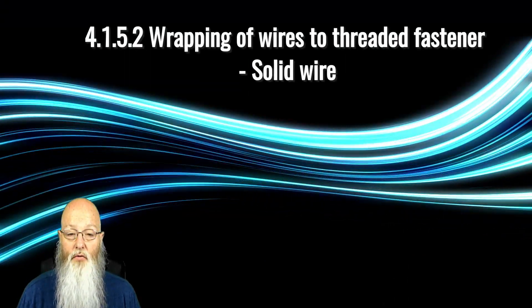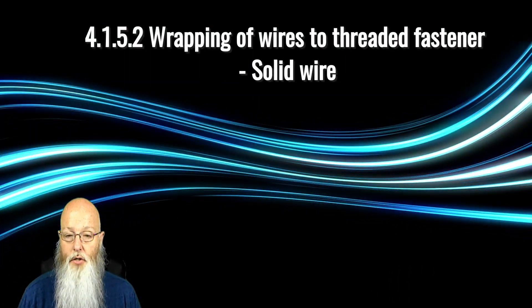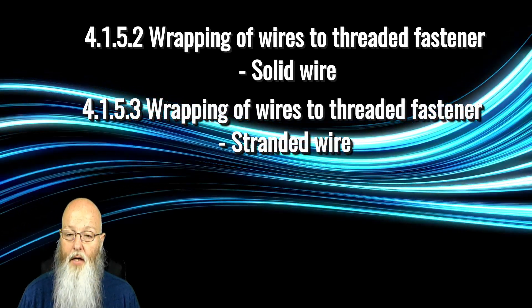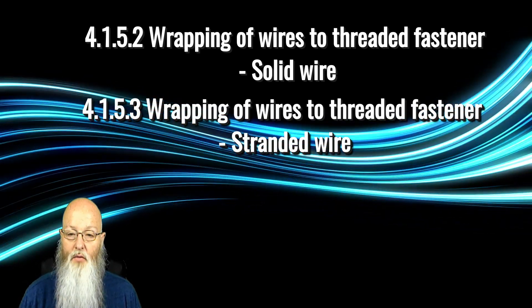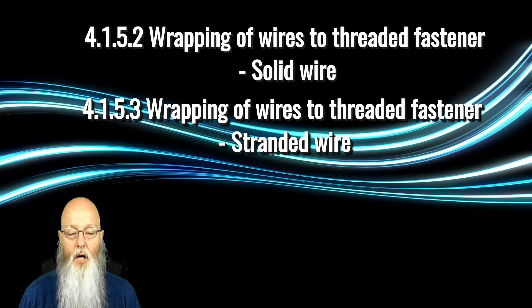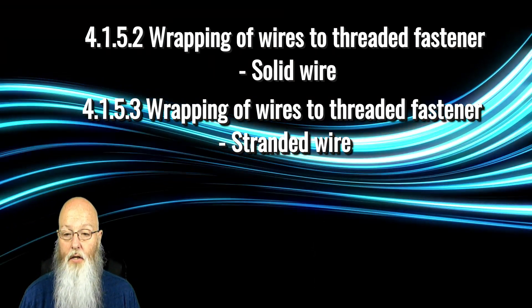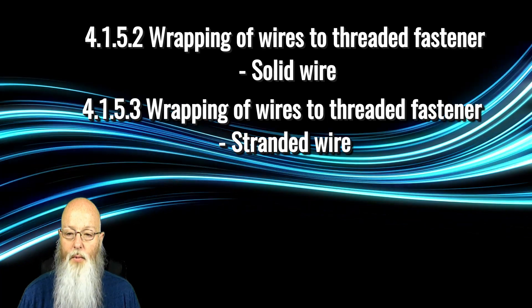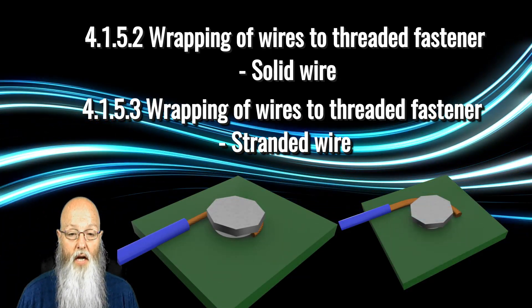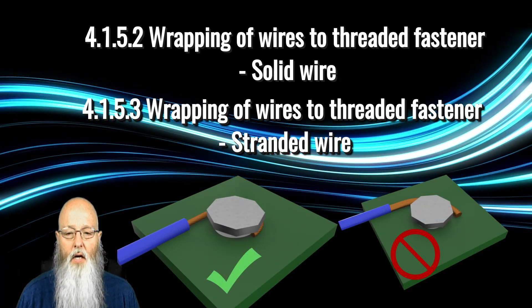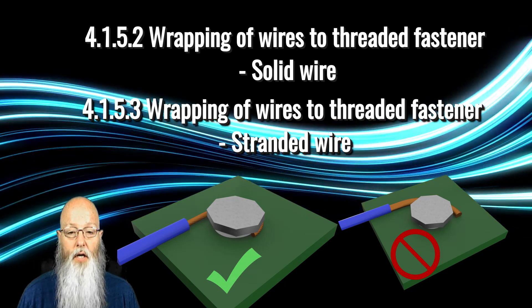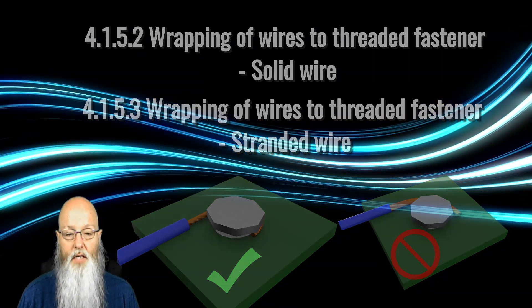Jumping now to 4.1.5.2 and 4.1.5.3: where previously, wrapping of wires through a threaded fastener was a single section encompassing both solid and stranded wires, these two have now been split out. The criteria for each are the same, so no major change there. There has been the addition of illustrations that help the document user envision the written criteria.